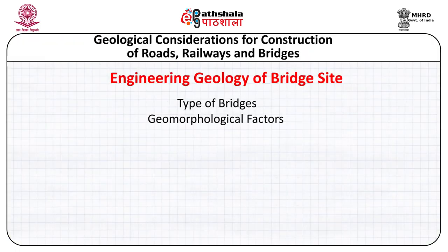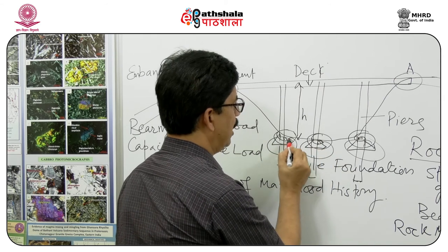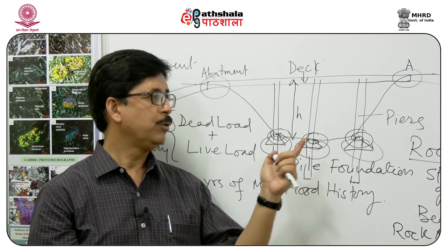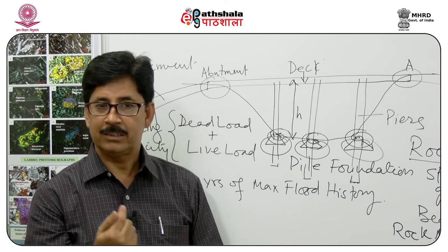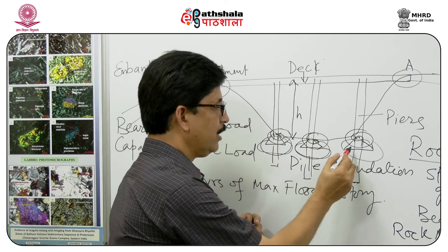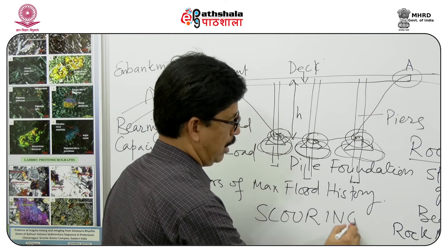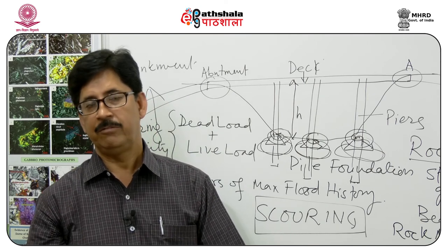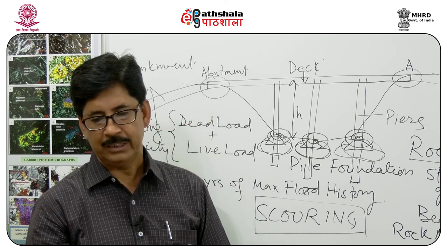Another issue is the formation of eddies around bridge piers. These eddies form because of restriction in flow due to the presence of piers, causing circular motion of water that erodes material around the bridge piers. This problem is called scouring. Scouring results in exposure and weakening of the foundation, which is an important issue that must be taken into consideration.